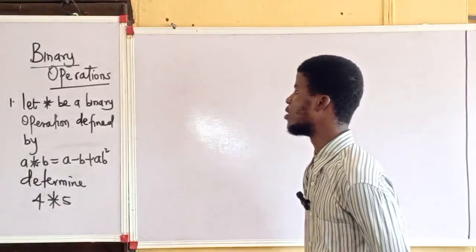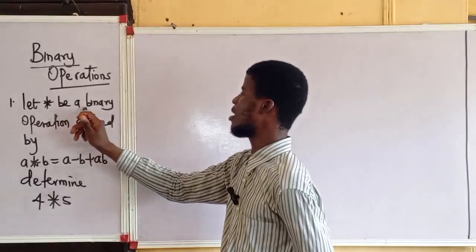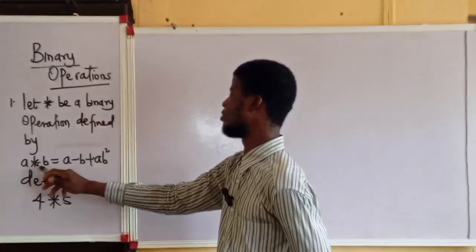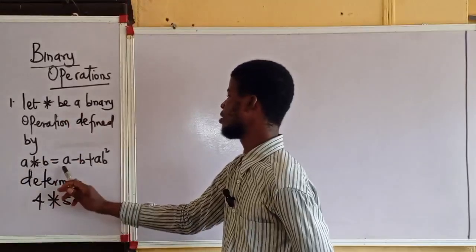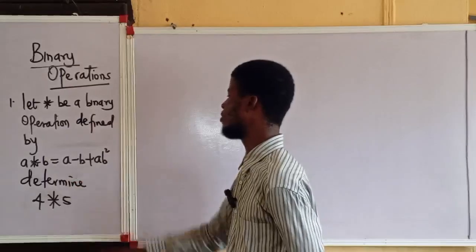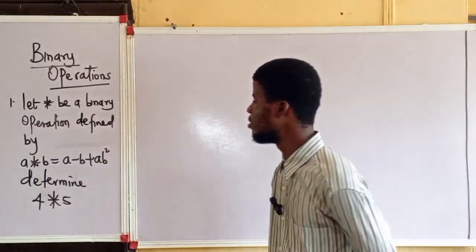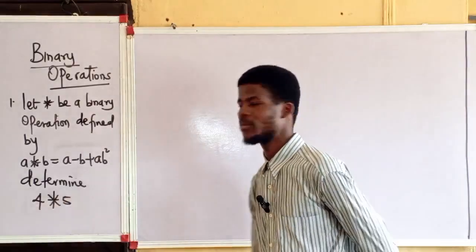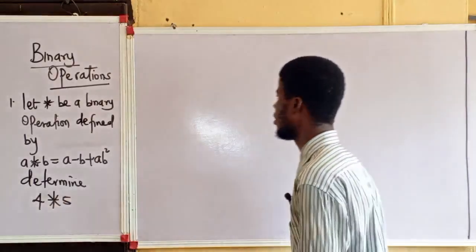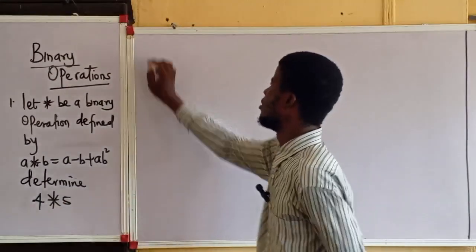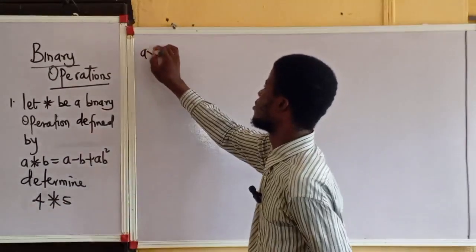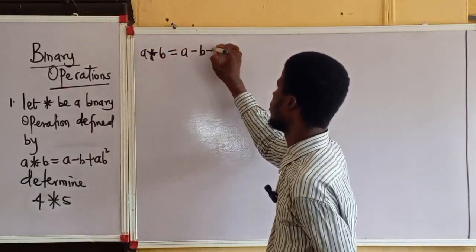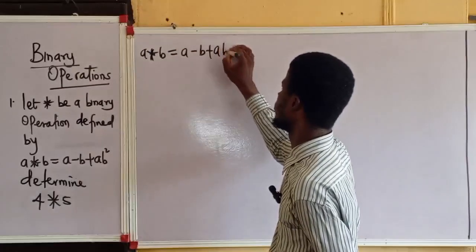The first question says: let this be a binary operation defined by a operation b equal to a minus b plus ab squared. We have to determine 4 operation 5. The definition says a operation b equals a minus b plus ab squared.